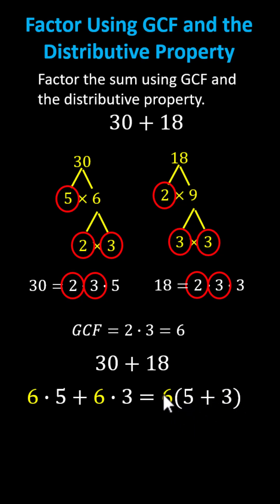Notice if we distribute the six, we have six times five, which is 30, plus six times three, which is 18. We now have the sum factored using the greatest common factor and the distributive property.